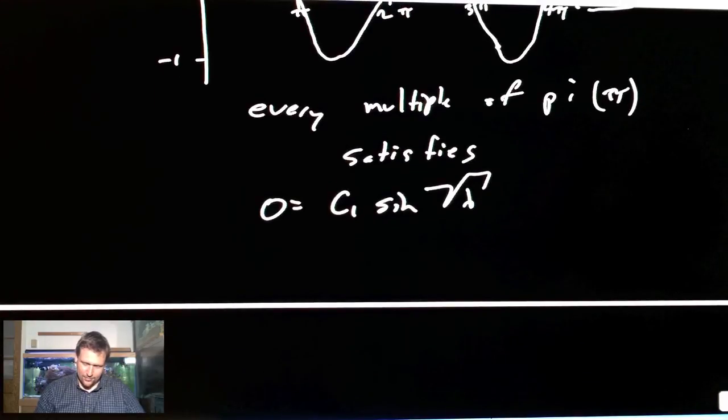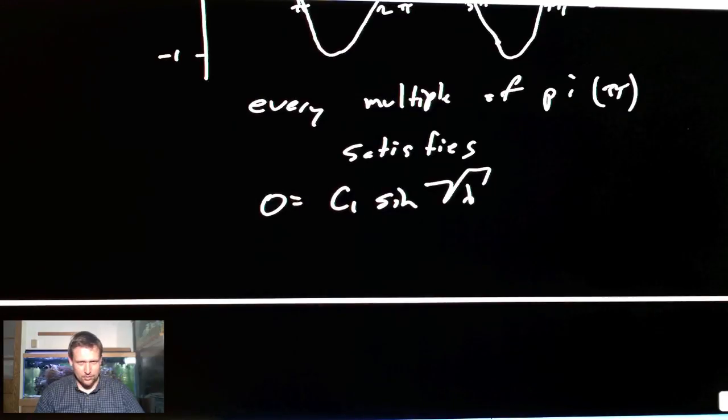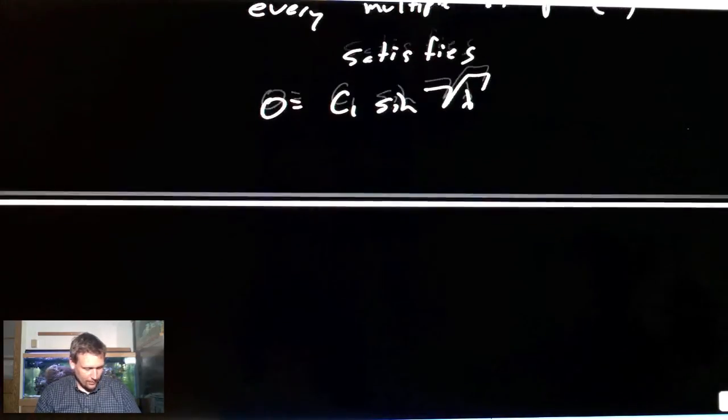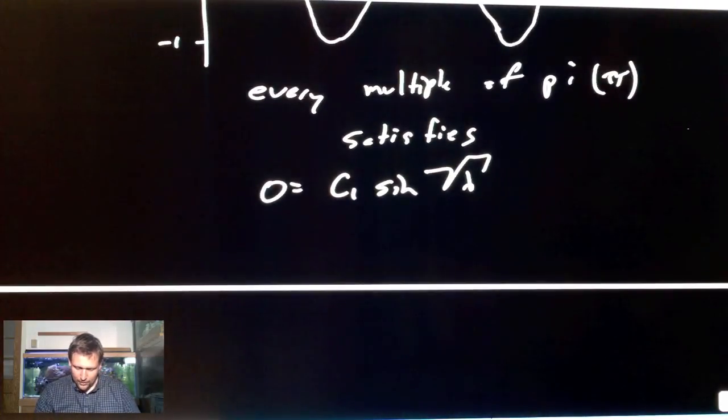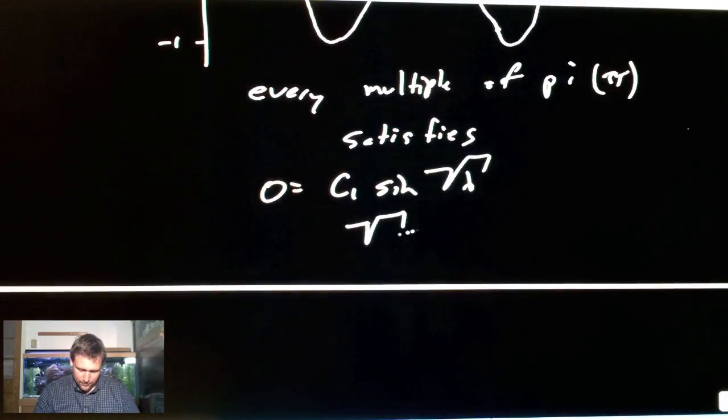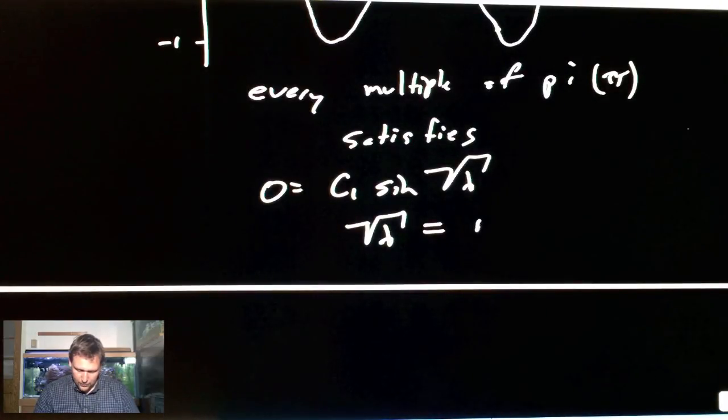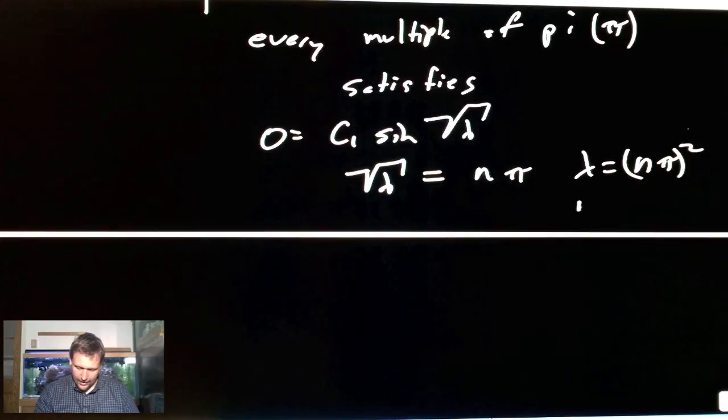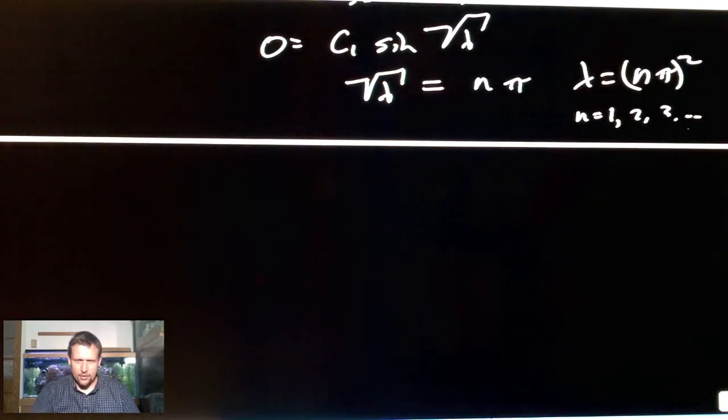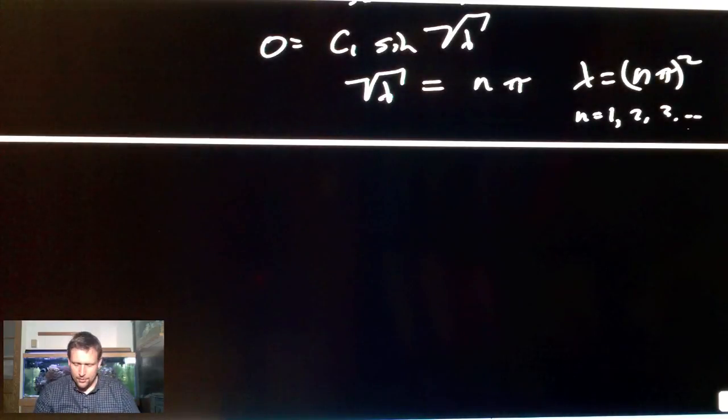That's supposed to go through the line there. And this is what the sine function looks like on this interval. You know, this doesn't look that wavy, of course, using a pen to draw this. But this is generally what it looks like. So, every multiple of pi, well, let me write out the Greek symbol. Pi satisfies 0 equals C1 sine square root lambda.